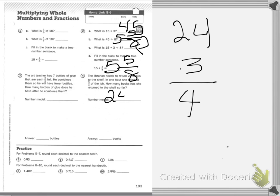So my number model is going to be 24 times 3/4 equals question mark. So just like I showed you before, you can do 24. Well, first of all, we can do what is 1/4 of 24.